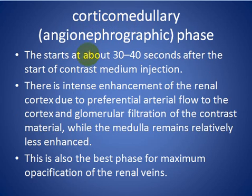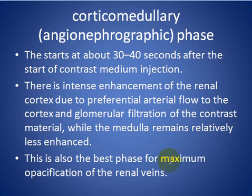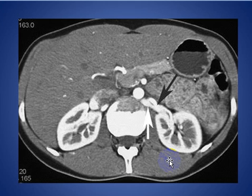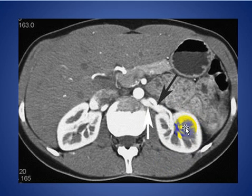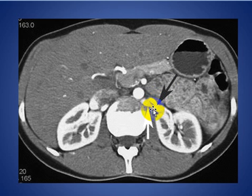The corticomedullary phase starts 30 to 40 seconds after injection of the contrast material, and there is intense enhancement of the renal cortex. The medulla remains not enhanced, and this is the best phase for opacification of the renal veins. Here you see the cortex is intensely enhanced and the medulla is not enhanced. The black arrow indicates the renal artery and the white arrow indicates the renal vein, which is retro-aortic.